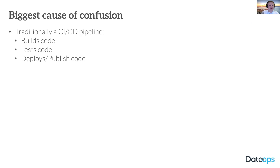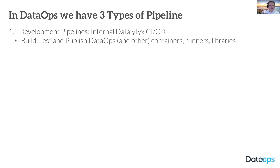There are actually three different types of pipelines, and this causes some confusion, especially for people who've worked in a DevOps environment before. These pipelines look an awful lot like CI/CD pipelines. Traditionally, a CI/CD pipeline does a very simple set of things: it builds some code, it tests some code, and then once everything's passed, it publishes some code. That's what a CI/CD pipeline does.